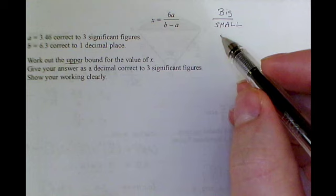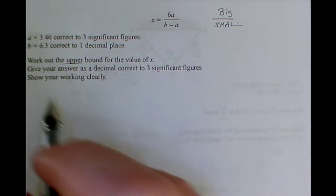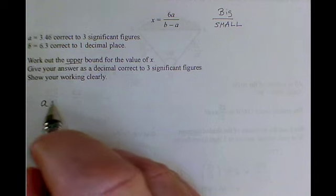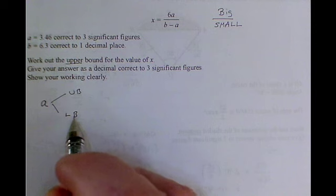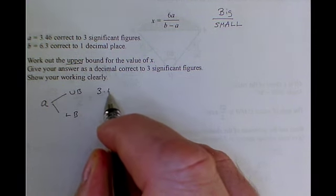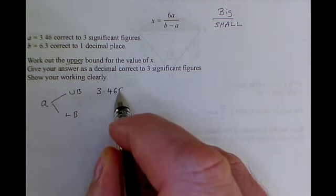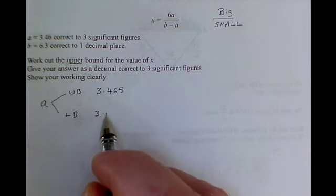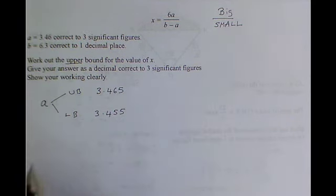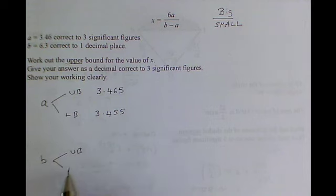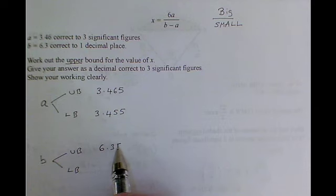So let's see the input value A. Let's write down what A is in terms of its upper and lower bound. So A could be as big as 3.465, and it could be as small as 3.455, and B could be as large as 6.35, and it could be as small as 6.25.